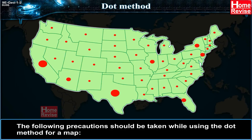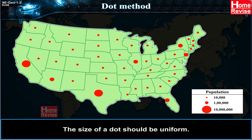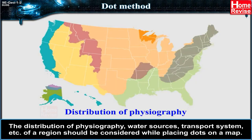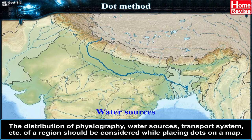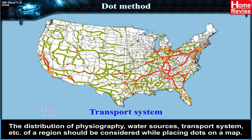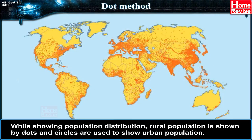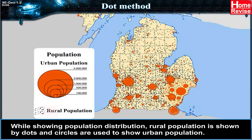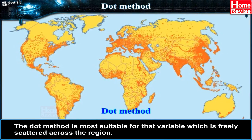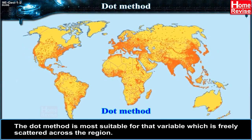The following precautions should be taken while using the dot method: the size of a dot should be uniform. The distribution of physiography, water resources, transport system, etc. of a region should be considered when placing dots. While showing population distribution, rural population is shown by dots and circles are used to show urban population. The dot method is most suitable for variables which are freely scattered across the region.